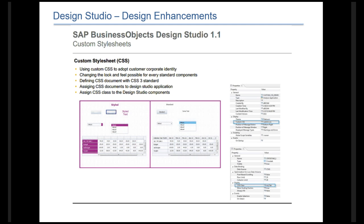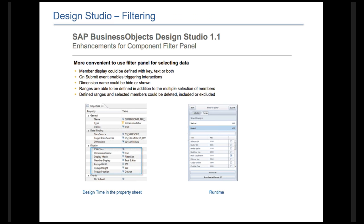Also in Design Studio 1.1, CSS stylesheets are now supported for those users who wanted to create their own color palettes. What we can do is create a number of different palettes using simple CSS and incorporate that into the Design Studio file. You can apply it either via application or via component, depending on how you want to brand your Design Studio dashboard.